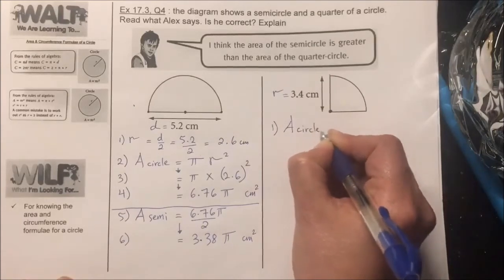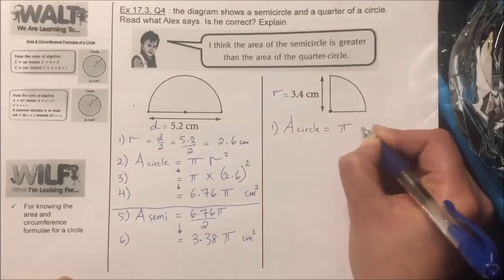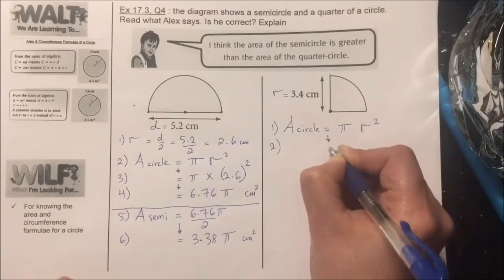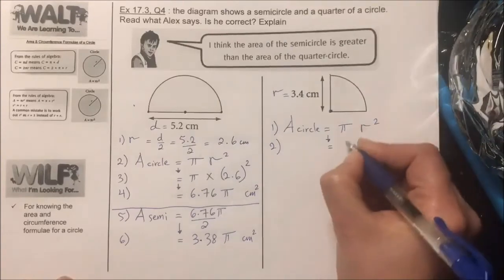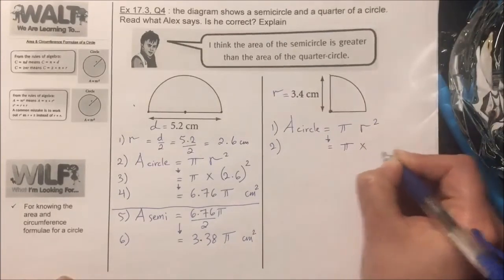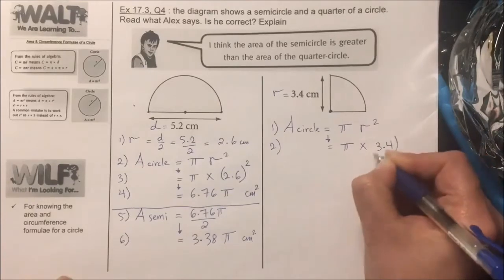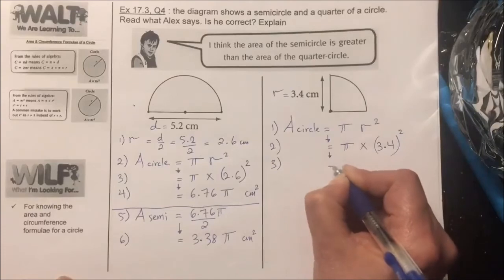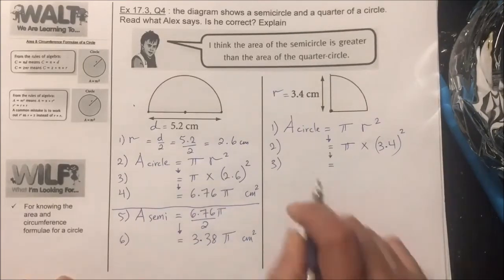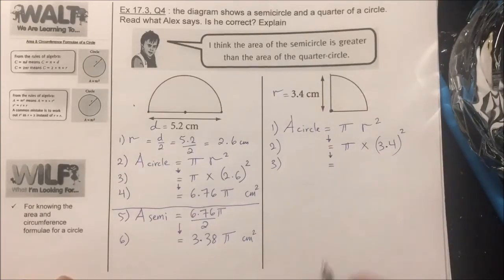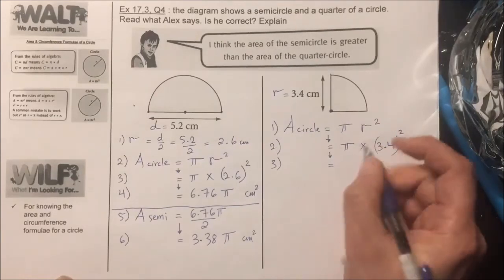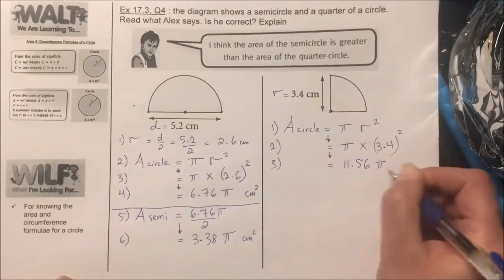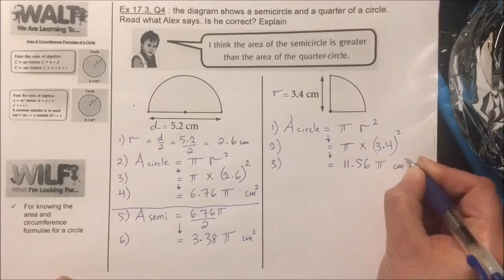The formula is πr². In step two, I substitute the value of r, so it's π times 3.4 squared. Calculating and leaving in terms of pi, the area of the full circle is 11.56π cm².